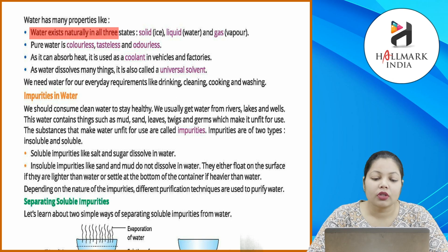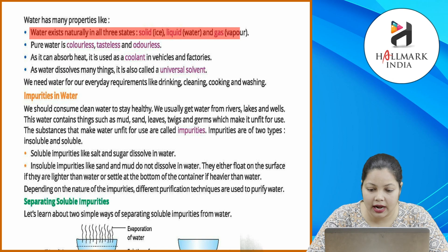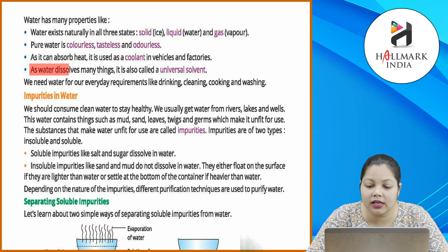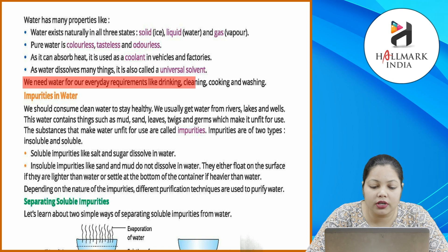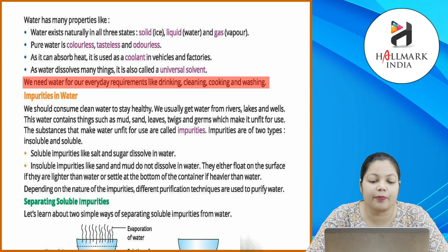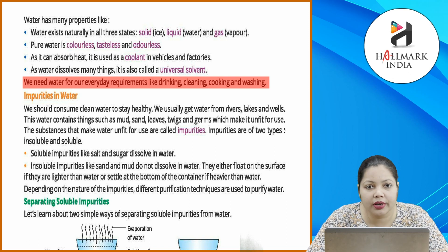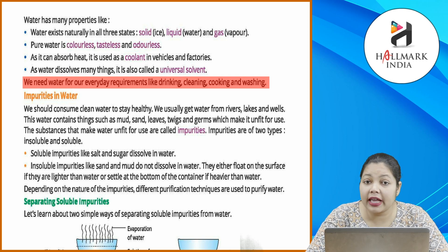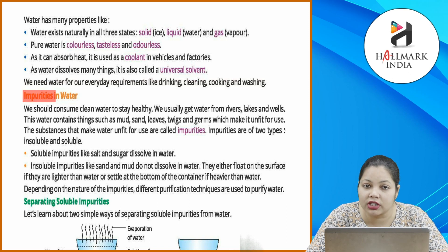Water has many properties: water exists naturally in all three states — solid (ice), liquid (water) and gas (vapor). Pure water is colorless, tasteless and odorless. It can absorb heat and is used as a coolant in vehicles and factories. As water dissolves many things, it is also called a universal solvent. We need water for everyday requirements like drinking, cleaning, cooking and washing. Water kaafi cheezein dissolve kar leta hai, isliye ise universal solvent kaha jaata hai.